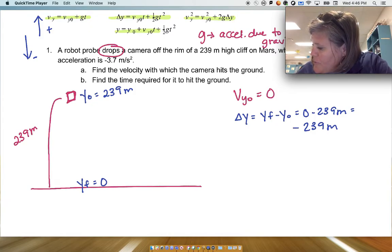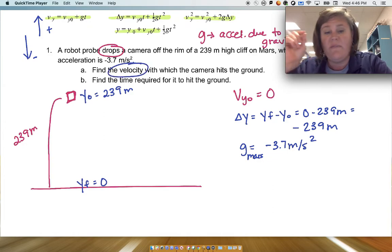All right, so we know the initial vertical velocity is zero, and we know the vertical displacement. So now we also know the acceleration, and that's for Mars, is -3.7 meters per second squared.